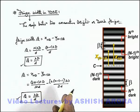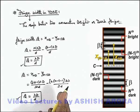So in interference pattern here we can conclude that the fringe width of bright fringe as well as the fringe width of dark fringe, both are equal.